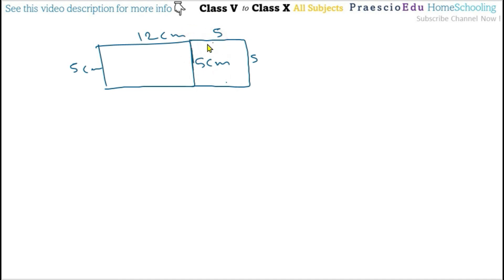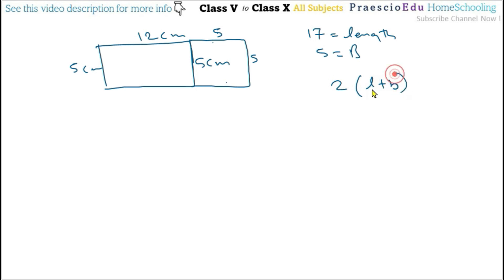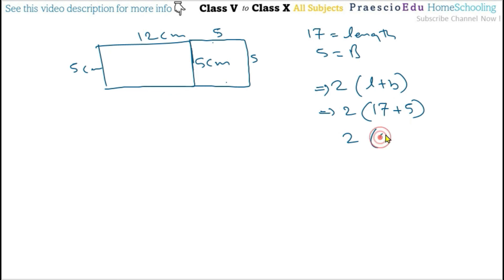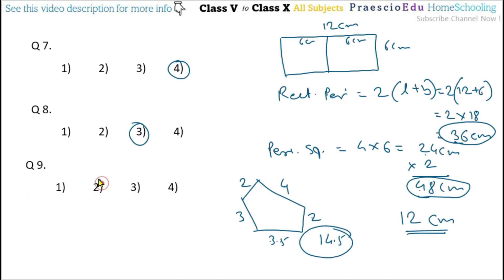The new combined figure has length 12 + 5 = 17 cm and breadth 5 cm. Perimeter = 2 × (L + B) = 2 × (17 + 5) = 2 × 22 = 44 cm. 44 cm is given in option number 2. So for question number 9, option number 2 is the correct one. Thank you.